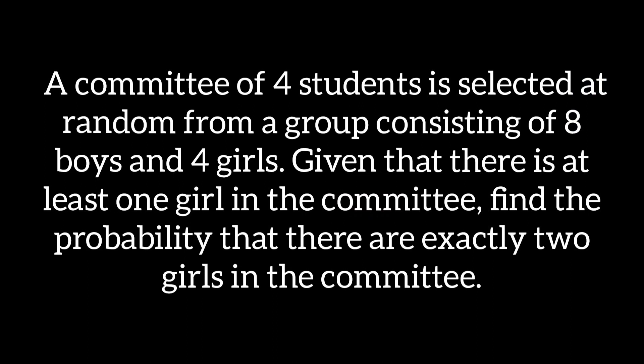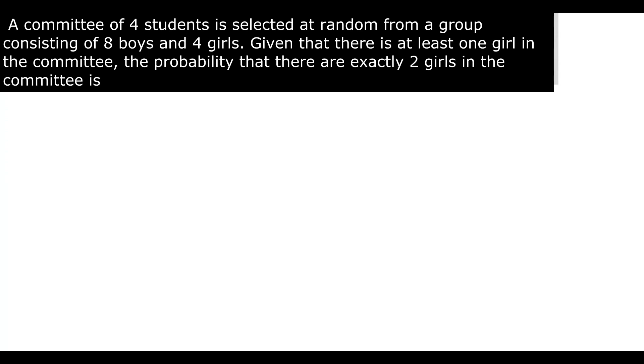A committee of four students is selected at random from a group consisting of eight boys and four girls, given that there is at least one girl in the committee. Let event A be the event that there is at least one girl in the committee.